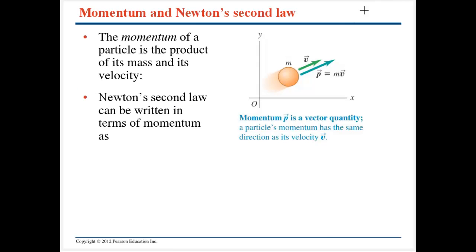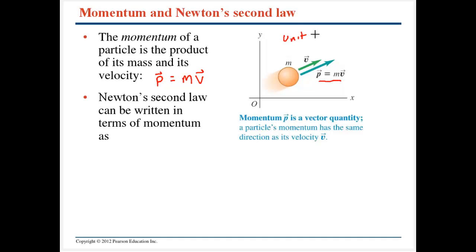Momentum is simply the product of a particle's mass multiplied by its velocity, written as a lowercase p: p = mv. You can see that it is a vector quantity in the same direction as the velocity. The units are kilogram meters per second, coming from the product of mass and velocity.